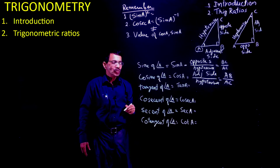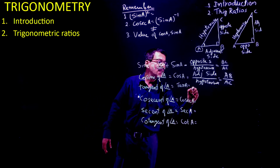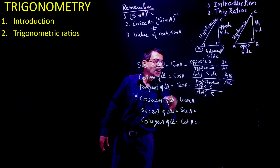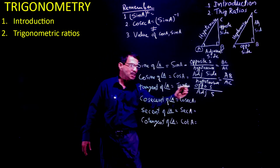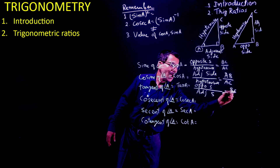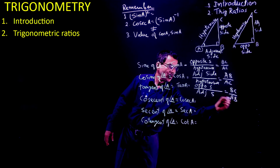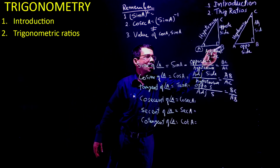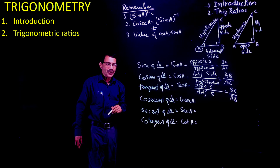Next is tan A. Tan A is opposite side divided by adjacent side. The opposite side is BC and the adjacent side is AB. So tan A equals BC upon AB.